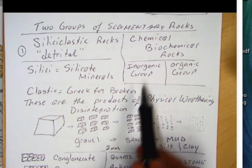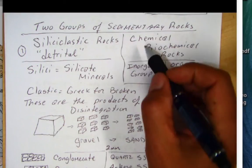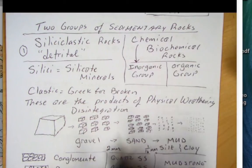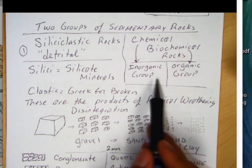The other group is the chemical or biochemical group. And this one we separate into an inorganic group which involves no organism, and the biochemical group involves basically the skeletons and shells of once living organisms. We'll talk about this group in a little while.